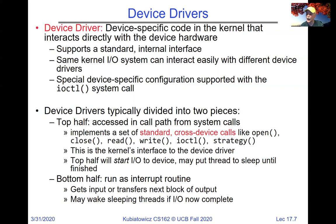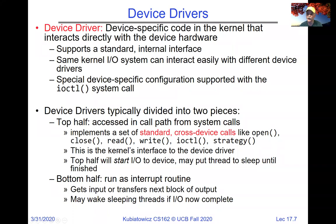Device drivers have two halves. The top half is what user code accesses — system calls come in with the standard open, read, write, and ioctl strategy calls. This is the kernel's interface to the device driver, and it's also where I/O is started and a thread or process may be put to sleep if necessary. The bottom half is the part that runs as an interrupt routine when the data comes back.